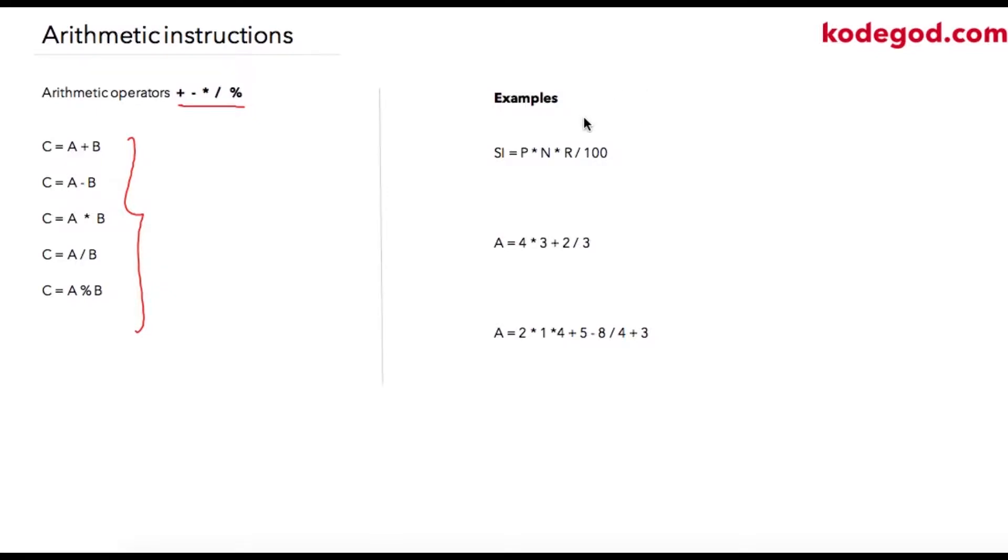We can simply write something like this, or we can use brackets. Ideally, I'll suggest you write brackets wherever possible to avoid logical errors. Similarly, this is the multiplication sign over here, this is the division sign. Now there's precedence also we need to take care of.